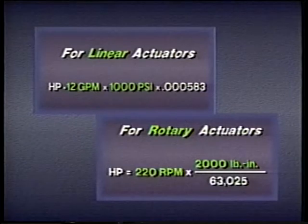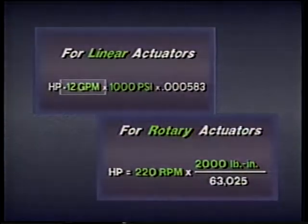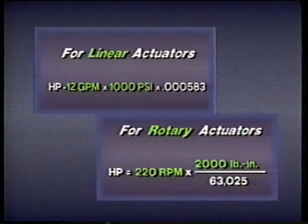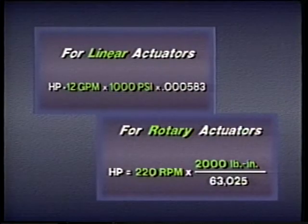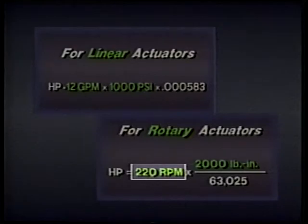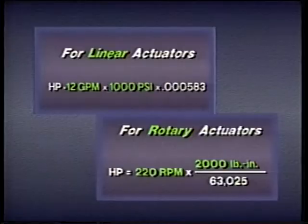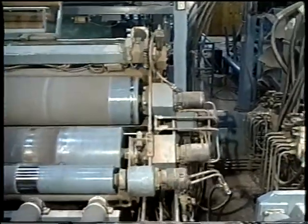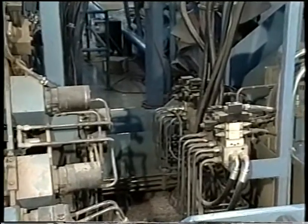Notice that in order for the formulas to work correctly, you must use the proper units of measurement. For linear actuators, flow must be in gallons per minute and pressure in pounds per square inch. For rotary actuators, speed must be in revolutions per minute and torque must be in pound-inches. This completes our lesson on hydraulic actuators. In the next lesson, we will look at how we control the energy in a hydraulic system.